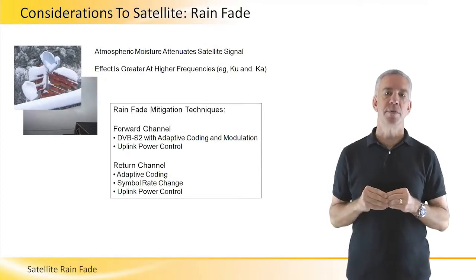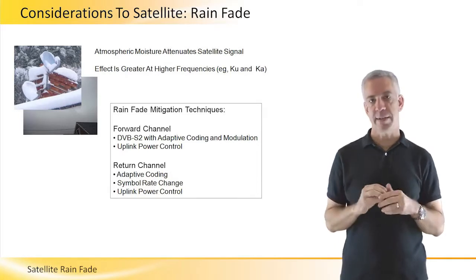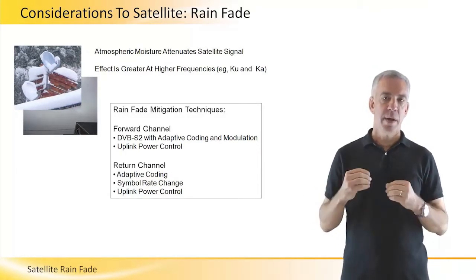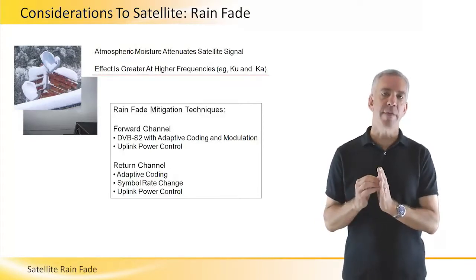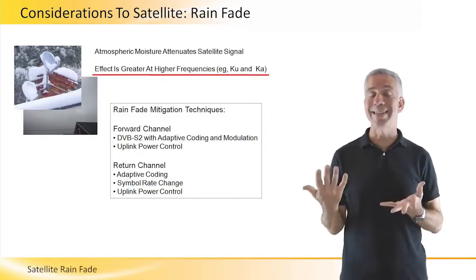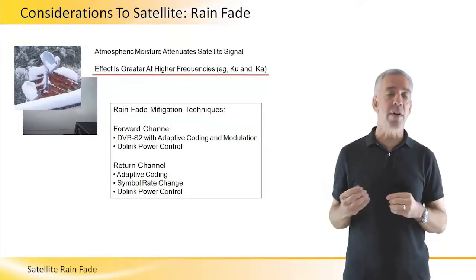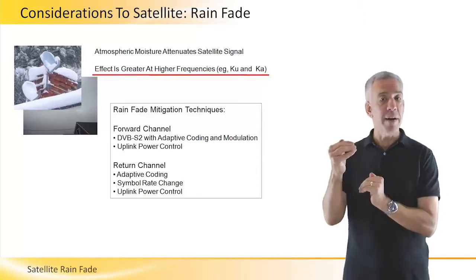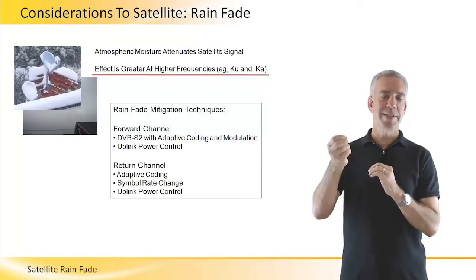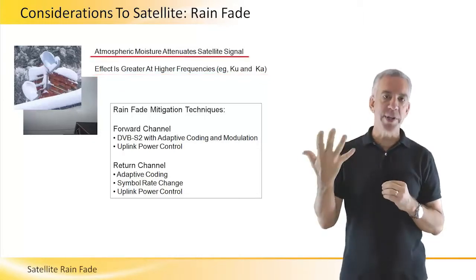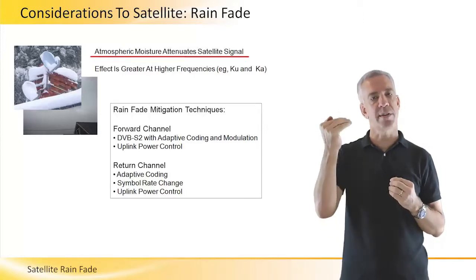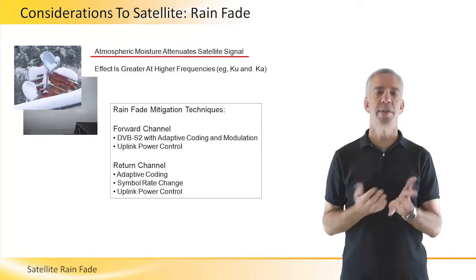Another consideration for satellites and VSATs is the impact of rain fade. The issue is that at higher frequencies — 10 and 12 gigahertz for KU band, or 18 and 29 gigahertz for KA band — rain or moisture in the atmosphere will attenuate the signal and cause degradation of signal quality.